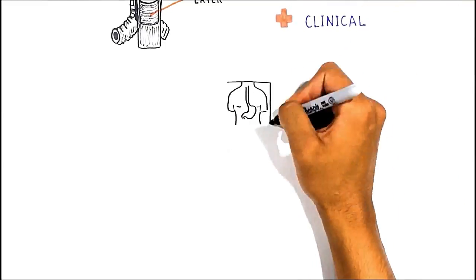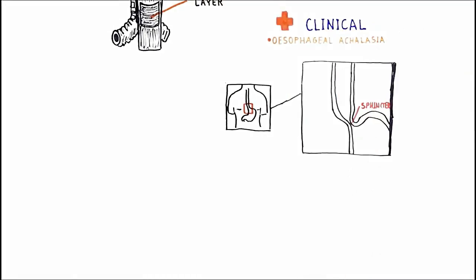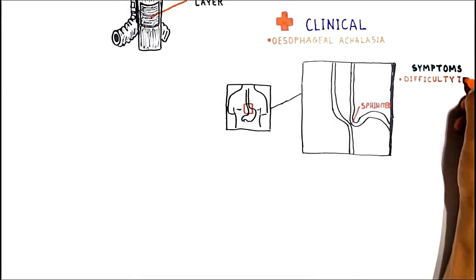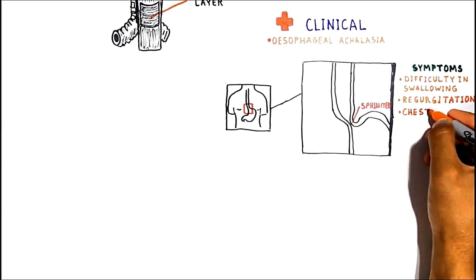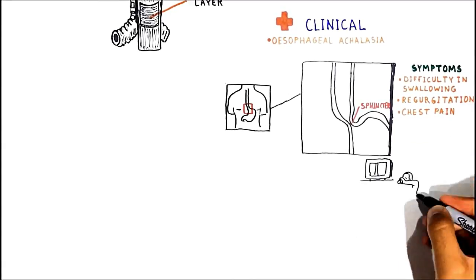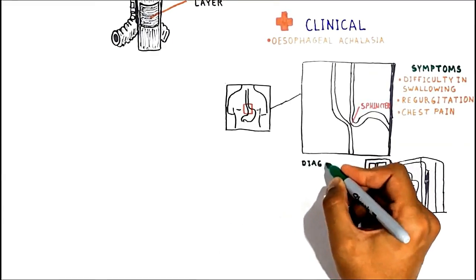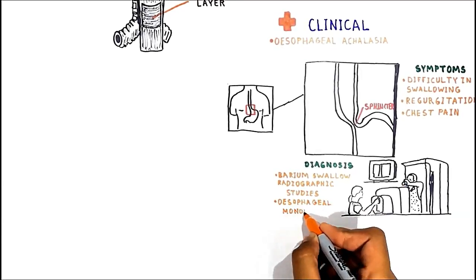Failure of the lower esophageal sphincter to relax — causing it to remain closed and fail to open when needed — is called esophageal achalasia. Achalasia is characterized by difficulty in swallowing, regurgitation, and sometimes chest pain. Diagnosis is reached with barium swallow radiographic studies and esophageal manometry.